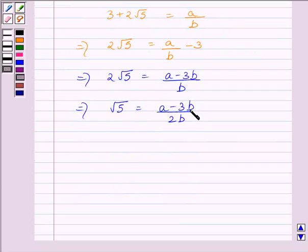Since A and B are integers, this implies A minus 3B upon 2B is rational. So, we can write A minus 3B upon 2B is rational.